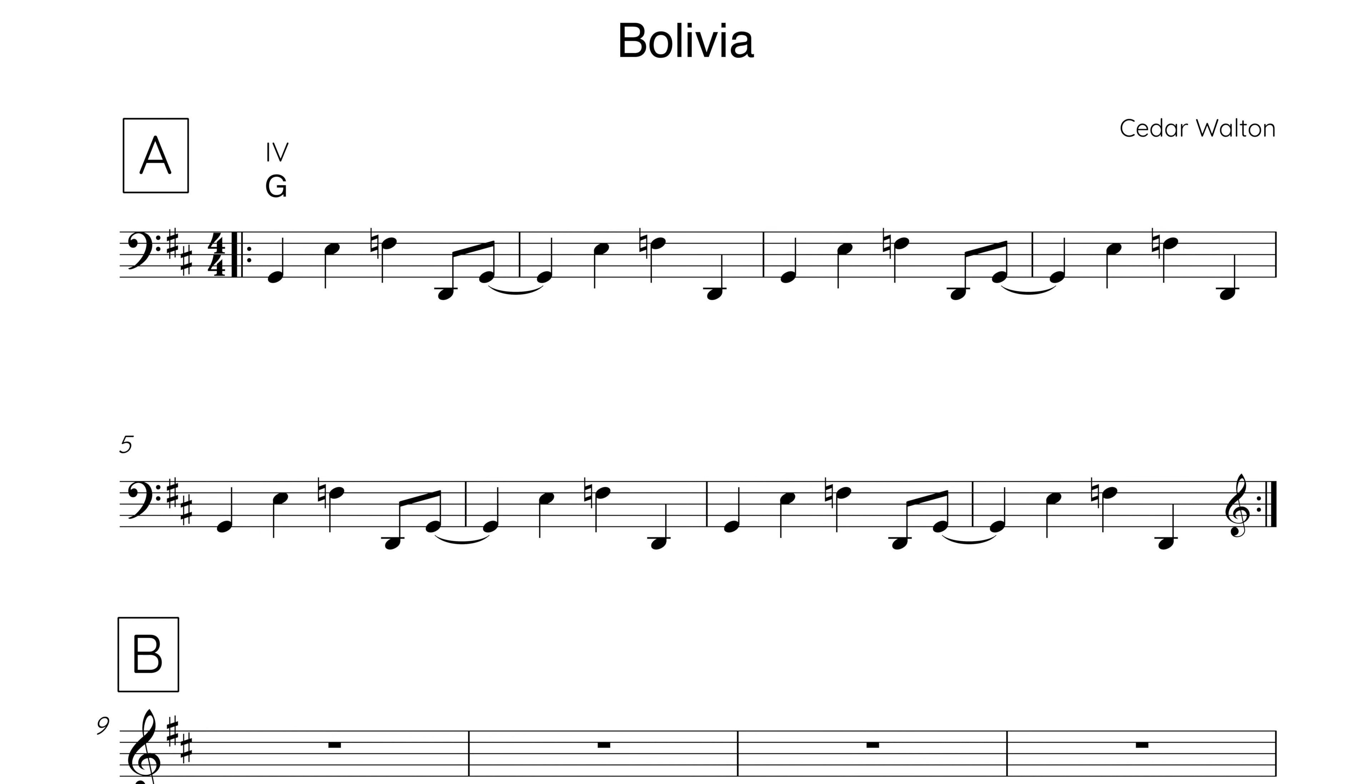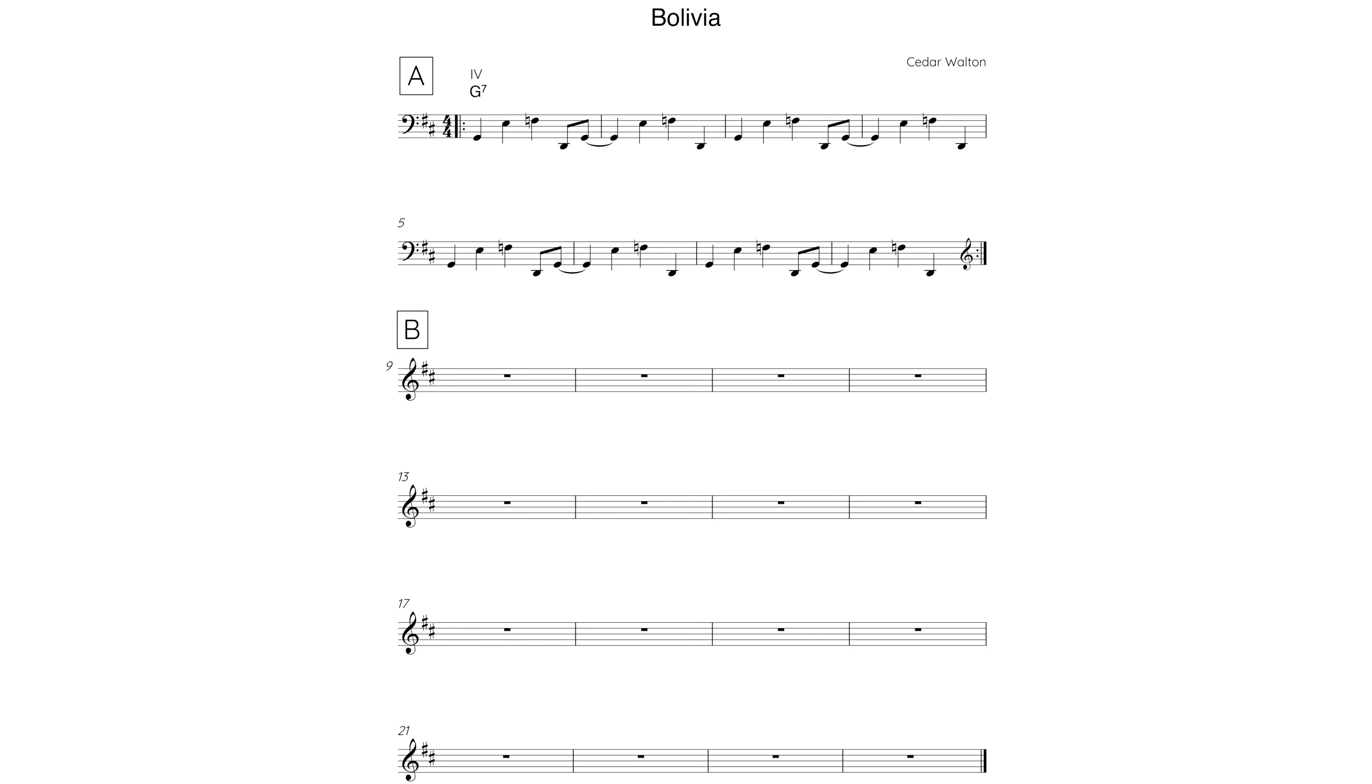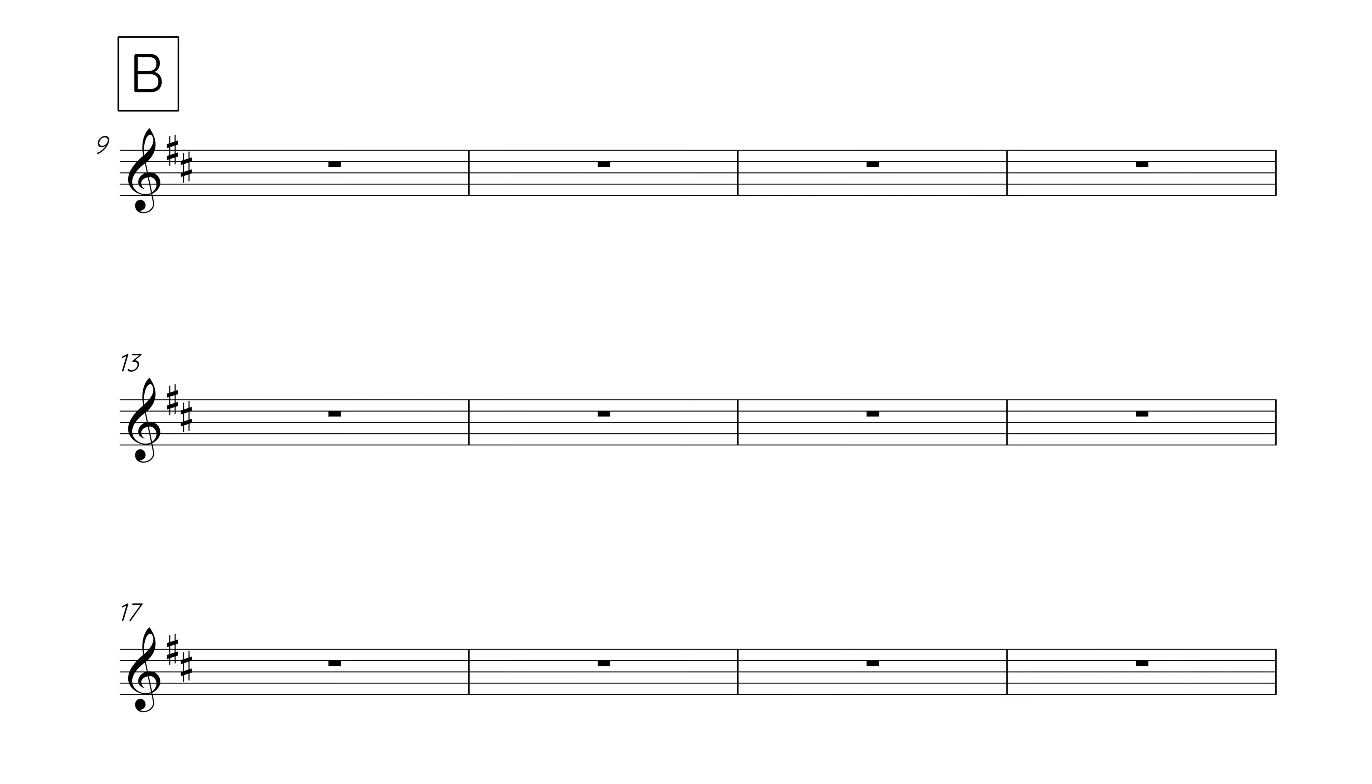Let's start by taking a look at the A section vamp. The A section vamp is made up of a 2 bar repeated bass line figure, which outlines chord 4. As Bolivia is in D major, chord 4 is G major. So, the bass line starts on the root, G, then jumps to the 6th E, the flat 7th F, and then falls to the 5th D, an octave lower. These four pitches are then repeated for the rest of the A section.